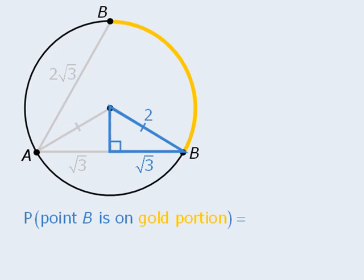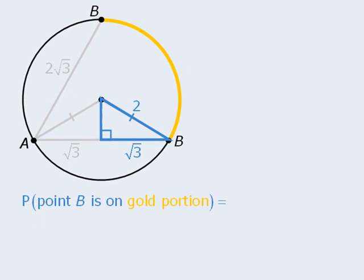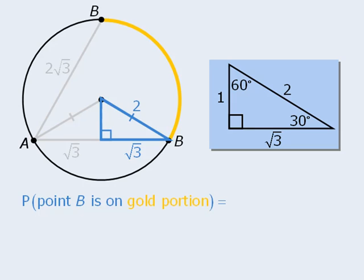At this point, this right triangle should look familiar. Its sides are that of a special 30-60-90 triangle, which means this angle here must be 30 degrees.